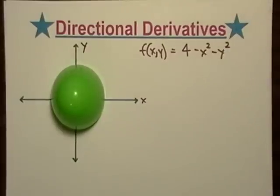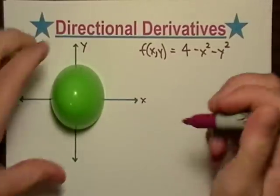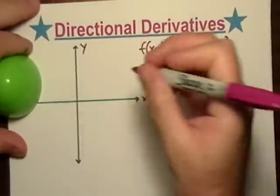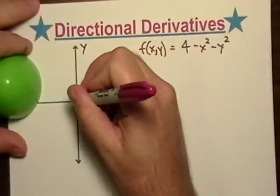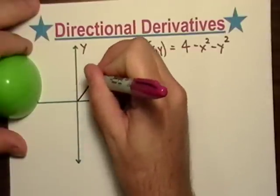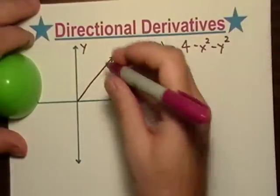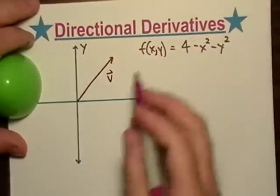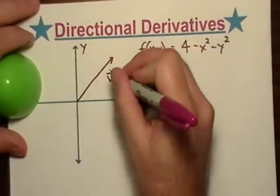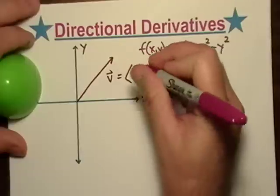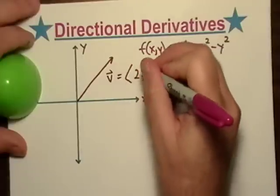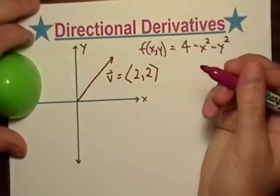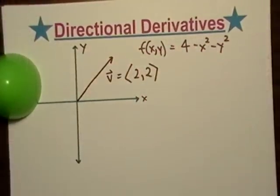So what we'll ask ourselves is: what would happen if we were to take the rate of change with respect to something else, like a vector at about a 45-degree angle? So let's say that vector is (2, 2).